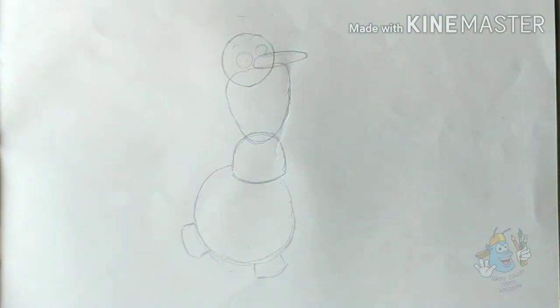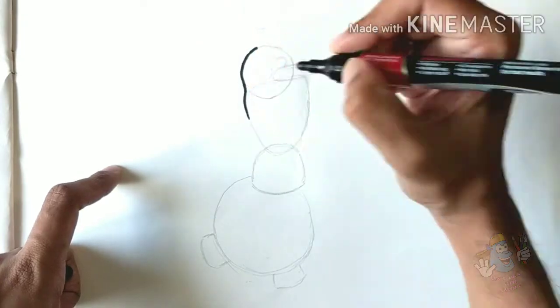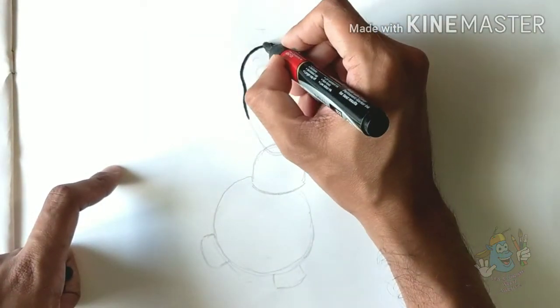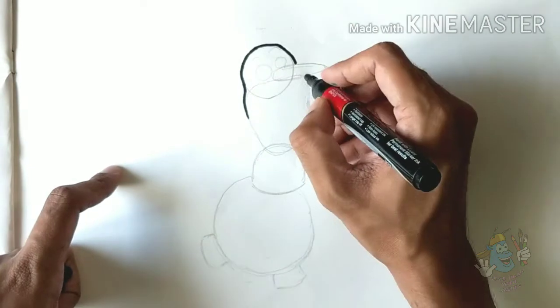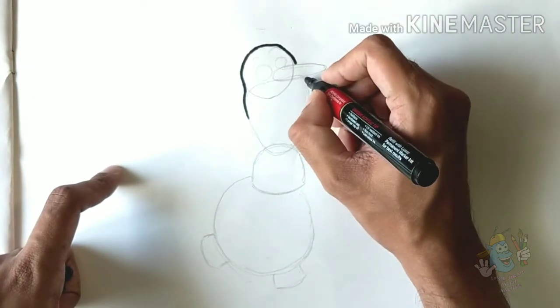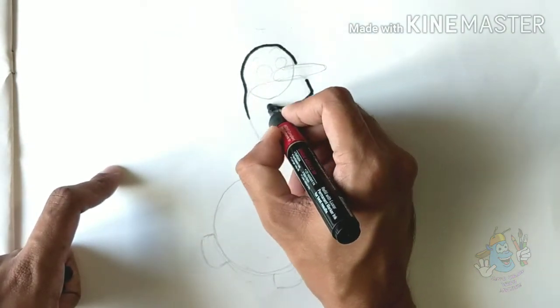Now that we know the basic shapes, let's finish the drawing. Just join the first two shapes for the face, just like that. Leave a little bit gap for the nose.